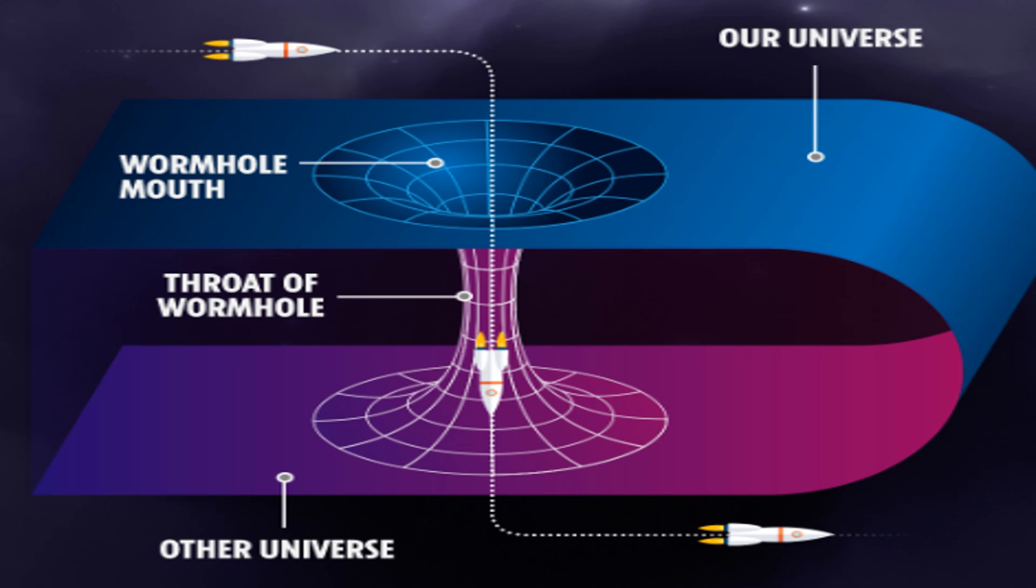Despite their theoretical allure, wormholes remain highly speculative at this point. No empirical evidence supports their existence and many physicists regard them as mathematical curiosities rather than physically realizable objects. Quantum theories of gravity such as string theory or loop quantum gravity might provide further insights into the nature of wormholes and their feasibility. Until then, wormholes remain a fascinating topic of theoretical research and a popular element in science fiction.